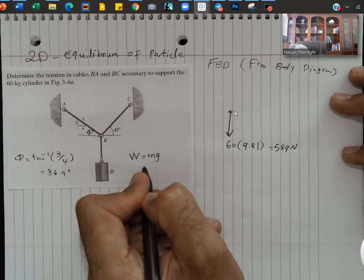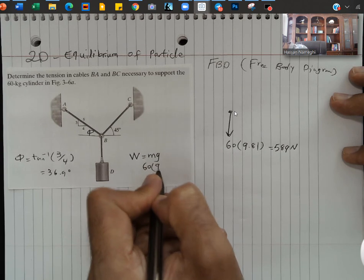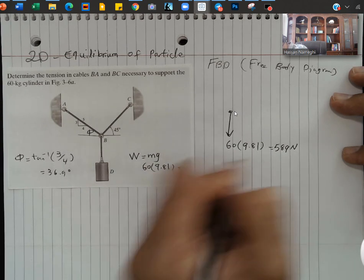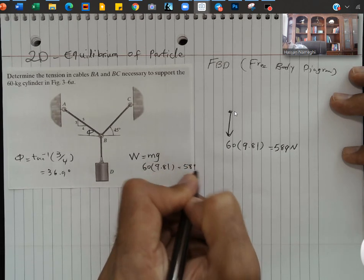So that would be the force at this location. Again, by the way, W is equal to mg, and in this case the mass is 60 kilograms multiplied by 9.81 and that gives us 589 newtons.